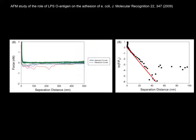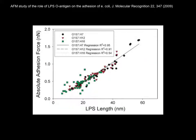On the left, we have data plotted on linear scales. On the right, semi-log scales. From the data on the left, we get the adhesion from this information here. From the right, from the slope here, we can get the layer thickness of the LPS.